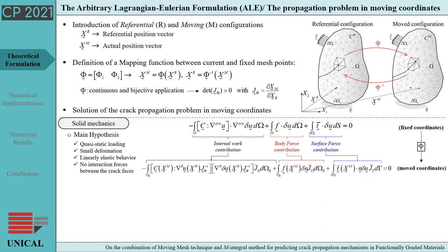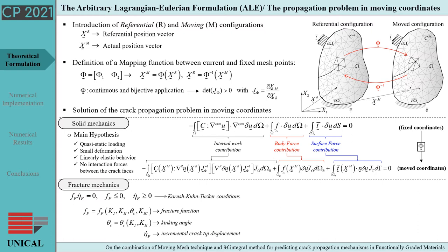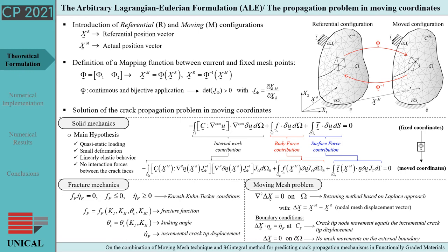The governing equations comprise three contributions. The first concerns the solid mechanics problem; in particular, the traditional variational form is expressed in the moved configuration by means of the mapping function. The second derives from the fracture mechanics problem, which provides the definition of crack nucleation conditions, the direction of propagation, and the crack tip incremental displacement. Finally, we have the equations of the moving mesh problem, which entails a Laplacian regularization procedure for reducing mesh element distortions. This problem is solved under constrained conditions on nodal mesh displacement to avoid mesh deformation on external boundaries and to impose that the displacement of the mesh node at the crack tip equals the incremental crack tip displacement predicted by fracture mechanics conditions.